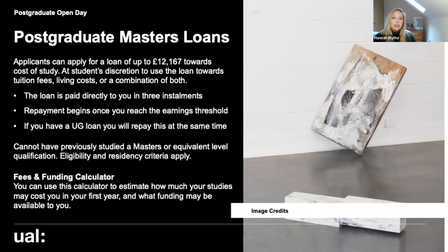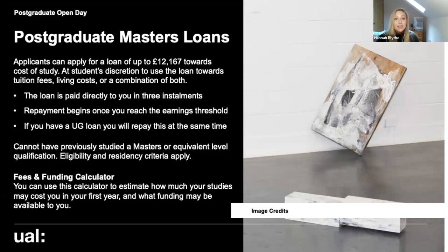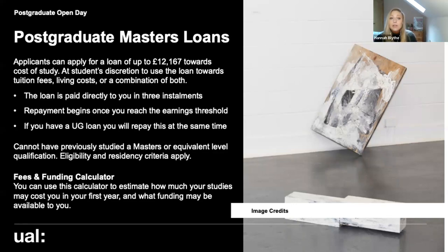There is also the postgraduate master's loan scheme from student finance — you can apply for a loan of up to £12,167 towards your cost of study. This loan is paid directly to the student in three instalments across the time of study, so you manage it as you wish — towards tuition fees, living costs or material costs. Repayment begins once you finish your course and reach a certain earnings threshold. If you've taken out an undergraduate student loan, you repay both simultaneously. Note: if you have previously studied a master's or equivalent level qualification, you would not be eligible for this loan even if you self-funded.